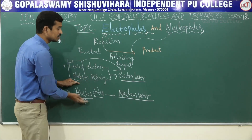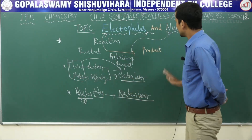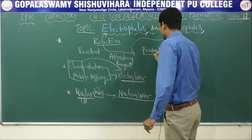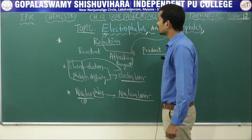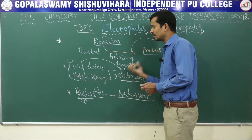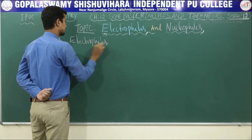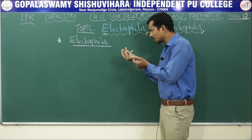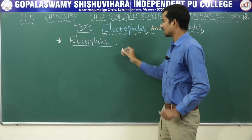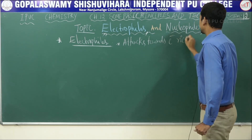Nucleophiles means the nucleus loving species, also called nucleus lover. Electrophiles and nucleophiles are attacking reagents — they convert a reactant to a product. The attacking reagent may be either electrophiles or nucleophiles. This is the basic information. Let us consider first what are electrophiles. Electrophiles means electron loving species. If an electron is attracted towards an electron-rich center, that is very important.